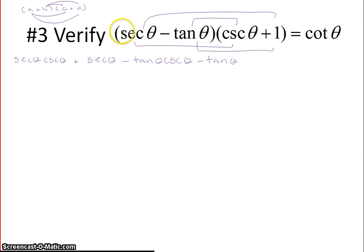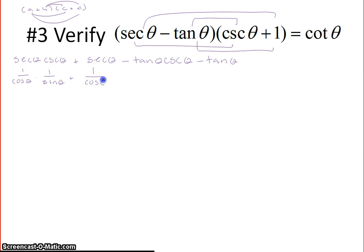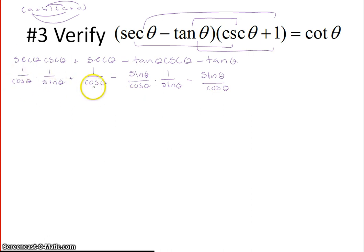Now, if anything can cancel right away, cancel it; otherwise, write things as sines and cosines to see if things will cancel. Secant is 1 over cosine of theta, cosecant is 1 over sine of theta, plus secant 1 over cosine of theta, minus tangent sine over cosine, times cosecant 1 over sine. The middle terms become plus 1 over cosine and minus 1 over cosine — those cancel entirely. We're left with 1 over cosine theta times sine theta, minus sine of theta over cosine of theta.